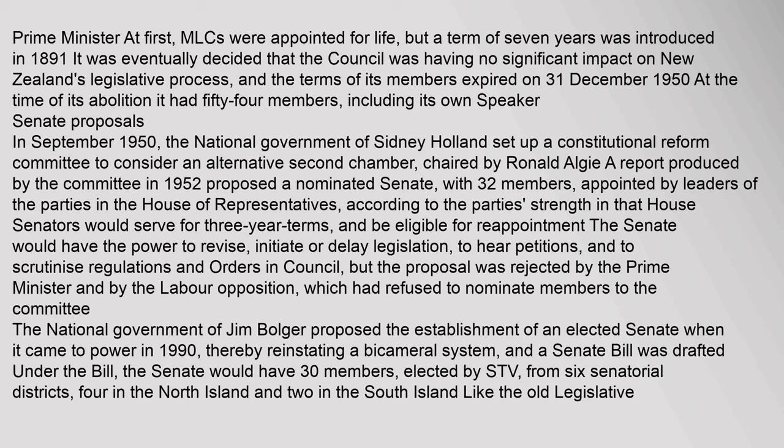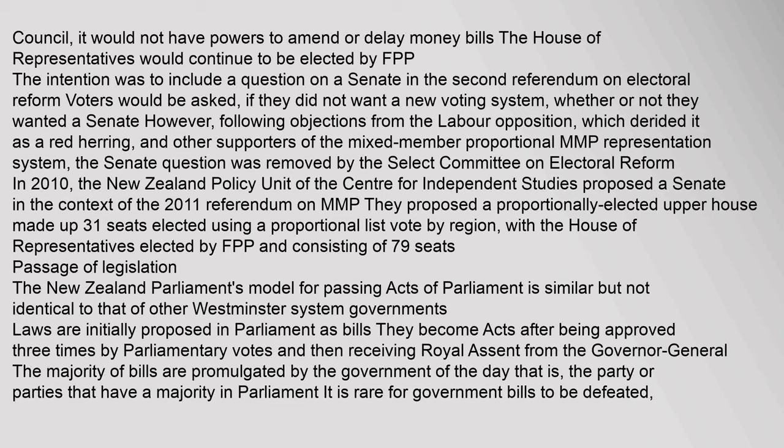Senators would be elected by STV from six senatorial districts — four in the North Island and two in the South Island. Like the old Legislative Council, it would not have powers to amend or delay money bills. The House of Representatives would continue to be elected by FPP. The intention was to include a question on a Senate in the second referendum on electoral reform; voters would be asked, if they did not want a new voting system, whether or not they wanted a Senate. However, following objections from the Labour opposition, which derided it as a red herring, and other supporters of the mixed-member proportional (MMP) representation system, the Senate question was removed by the Select Committee on Electoral Reform. In 2010, the New Zealand Policy Unit of the Centre for Independent Studies proposed a Senate in the context of the 2011 referendum on MMP. They proposed a proportionally elected upper House made up of 31 seats elected using a proportional list vote by region, with the House of Representatives elected by FPP and consisting of 79 seats.